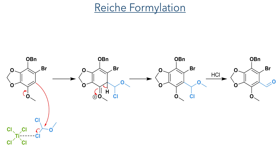To functionalize the remaining C-H bond of the aromatic ring, they then used a Rieche formylation. Dichloromethyl methyl ether was first activated by titanium tetrachloride and underwent electrophilic aromatic substitution with the ring, which was activated by the ortho methoxy group. This produced the chloromethyl ether upon elimination of a proton, and hydrolysis of this species with hydrochloric acid produced the target aldehyde.